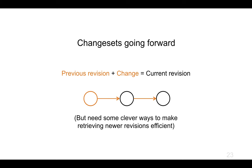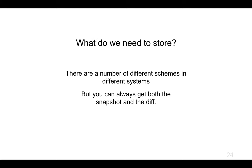Verbatim to try and make it efficient checking out current versions. So there's a number of different schemes that are in a number of different systems. But whichever scheme you're using, you can always get both the snapshot and the diff, you know, any of the snapshots and the diff between any of the revisions.